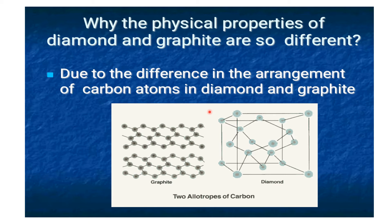Graphite is used as a dry cell, in electric arcs, and as a lubricant and pencil lead. Although diamond and graphite are both allotropes of carbon, their physical properties differ due to the difference in the arrangement of carbon atoms. Their thermal and electrical conductivities are totally different from one another. Carbon atoms in graphite are arranged as layers, whereas in diamond they are arranged in a tetrahedral pattern.